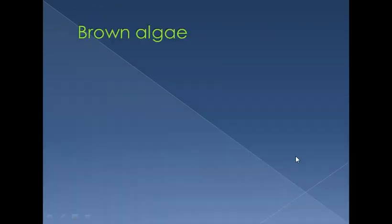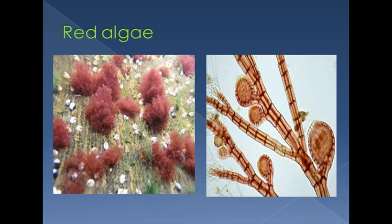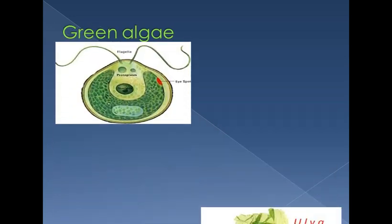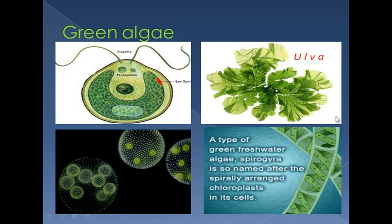Brown algae are also known as giant algae (kelps). They have three parts: the holdfast (attached to the substrate), the stipe, and blades. These are found in oceans. Red algae include Polysiphonia. Green algae include Chlamydomonas, Ulva, and Volvox. Spirogyra is named for its spiral-shaped chloroplasts.